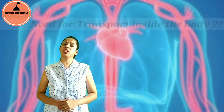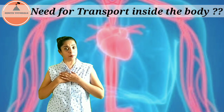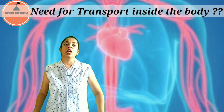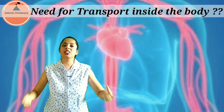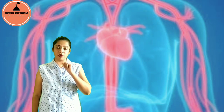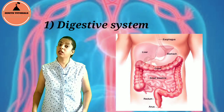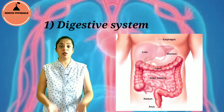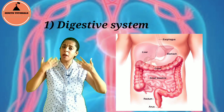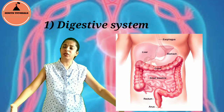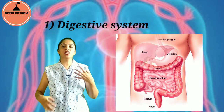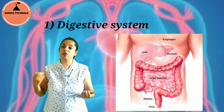Now, what is the need of transport inside our body? Every organ of our body requires the involvement of circulatory fluids. For example, first: the digestive system. The digestive system digests and absorbs the nutrients and passes those nutrients to all the body parts, and here it requires the circulation of fluids.